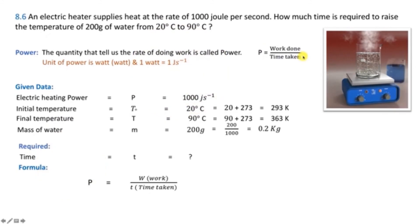Problem 8.6: An electric heater supplies heat at the rate of 1000 J/s (power = 1000 W). How much time is required to raise the temperature of 200 g of water from 20°C to 90°C? Mass = 200 g = 0.2 kg.